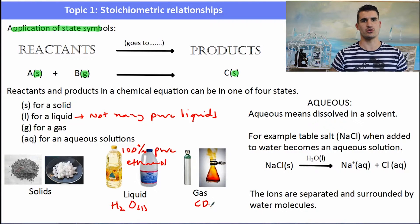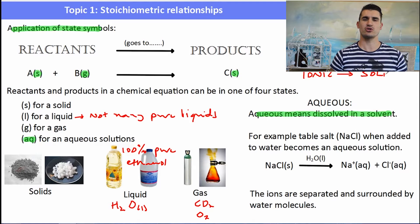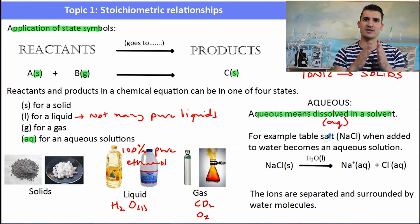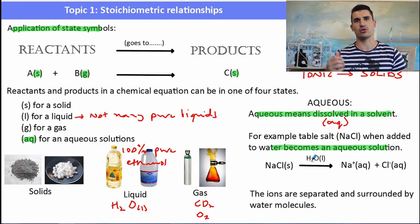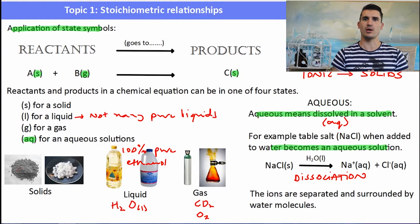Aqueous means an aqueous solution — something dissolved in a solvent, usually water. Ionic compounds are always found as solids, but when added to water they form an aqueous solution. For example, table salt NaCl added to water breaks apart into its ions: Na and Cl separate from each other to form sodium ions (aqueous) and chloride ions (aqueous). This is called dissociation. The ions are now separate, surrounded by water molecules, making it an aqueous solution.